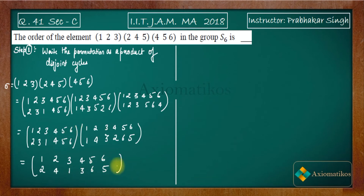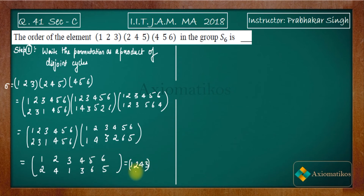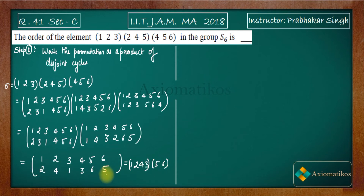Now we write the final product in the form of disjoint cycles. Starting with one: the image of one is two, image of two is four, image of four is three, image of three is one — so we get the cycle (1 2 4 3). What remains is five and six: five maps to six and six maps to five, giving the cycle (5 6). So the full permutation is (1 2 4 3)(5 6).